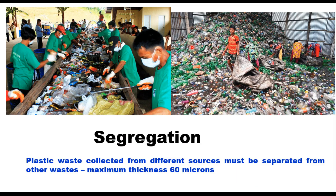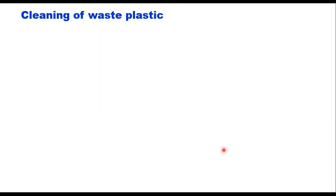Once collected, the next step is segregation. Waste plastic collected from different sources must be separated from other waste. Generally, the maximum thickness of plastic to be used in roads is 60 microns. It is essential to separate waste plastic from solid waste, and this can be done by different methods like air classification, air tabling, dry and wet gravity separation, or any other suitable method. These methods are described in a report of the Ministry of Housing and Urban Affairs. LDPE and HDPE are the only plastics recommended for use in road construction and can be easily separated from other forms of waste plastic by their usual identification.